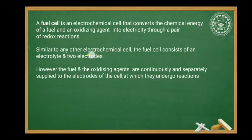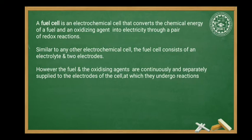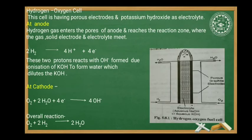Similar to any other electrochemical cell, the fuel cell consists of an electrolyte and two electrodes. However, the fuel and oxidizing agents are continuously and separately supplied to the electrodes. For example, in the hydrogen-oxygen fuel cell, oxygen and hydrogen are continuously supplied to their respective electrodes.